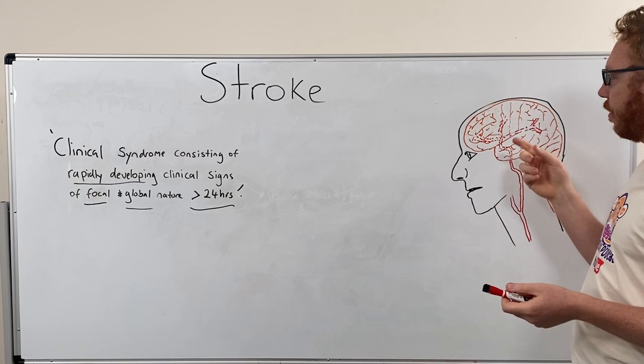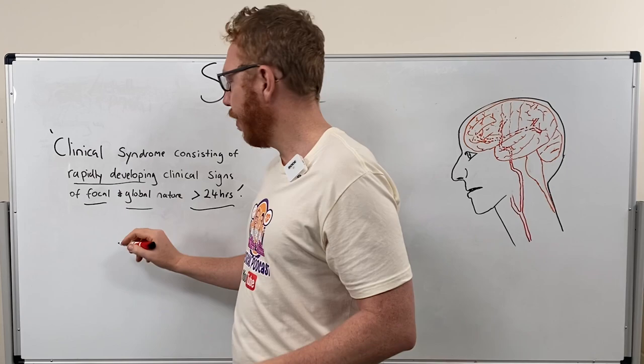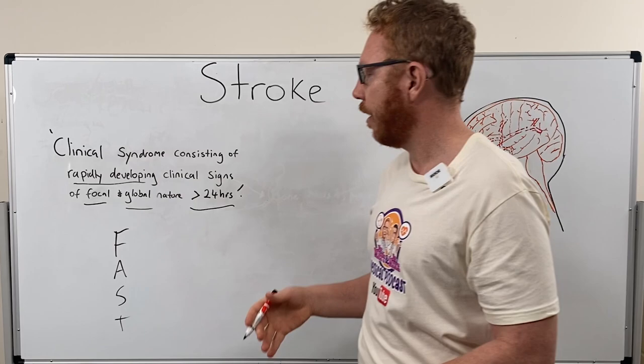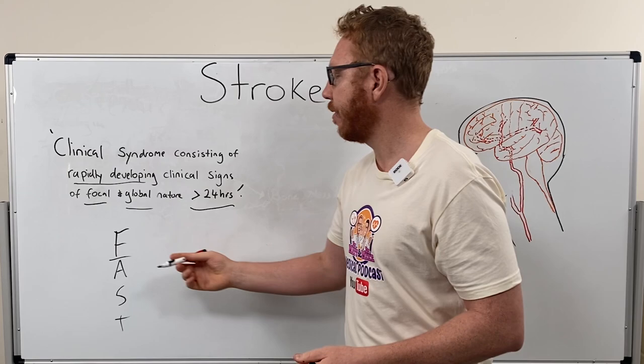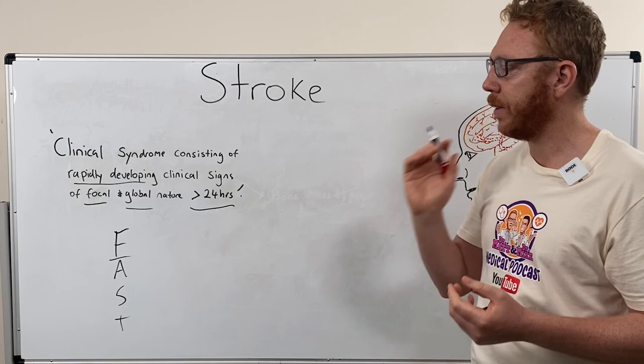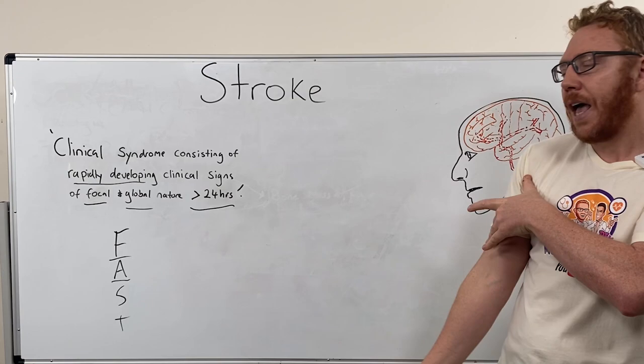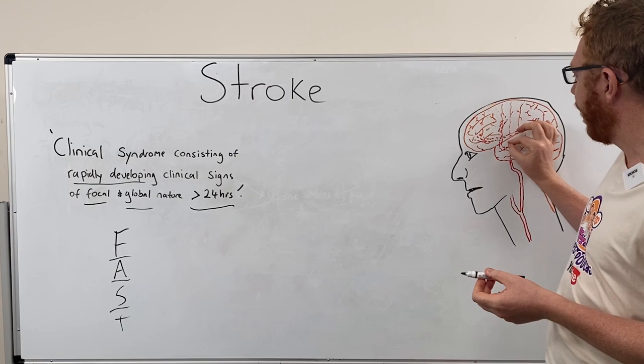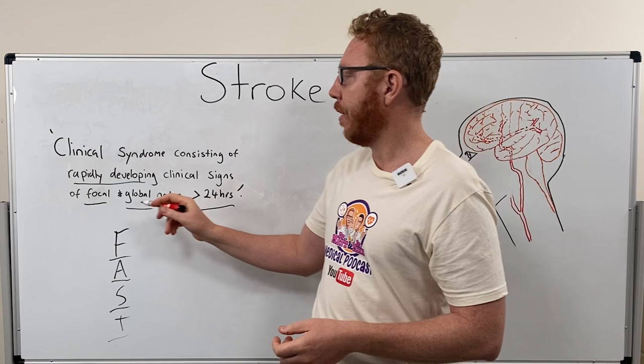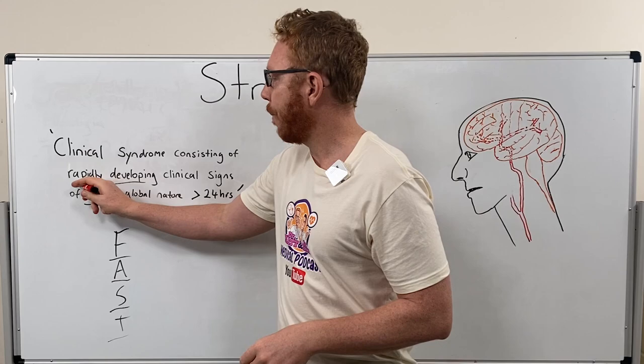This leads to the acronym FAST, which you may have seen before — a classic manifestation seen with stroke. F is for Face: the neurons supplying the face have been lost, causing drooping. A is for Arm: the right arm will be affected. S is for Speech: slurred speech, which could be aphasia from Broca's area. And T refers to Time — time is of the essence because we have to act quickly, otherwise it's going to rapidly develop and deteriorate.